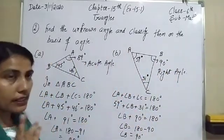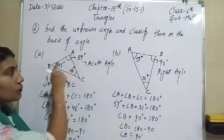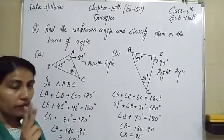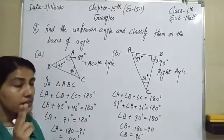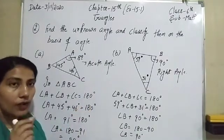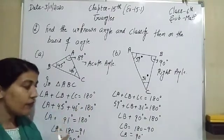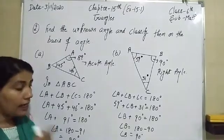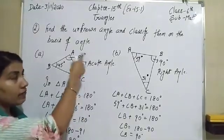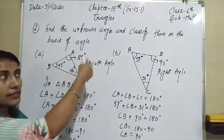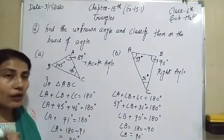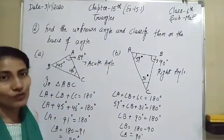When we have to find the third angle and two angles are given, we always use the sum of angles of triangle is 180 degrees, and in this way we can easily find the third angle. After finding it, we write down the type of angle: if less than 90 that is acute angle, and if it is 90 that is right angle.